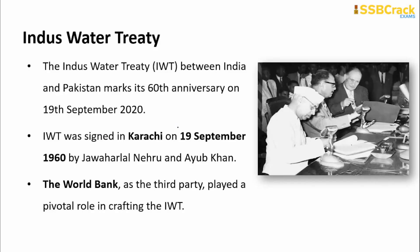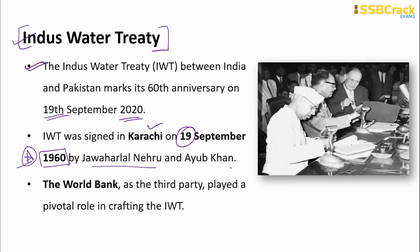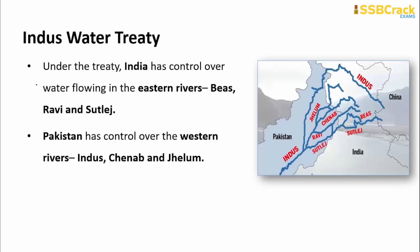The next important update is about the Indus Water Treaty. On 19th September 2020, it was the 60th anniversary of the Indus Water Treaty. The treaty is between India and Pakistan and was signed in Karachi on 19th September 1960. It was signed between Jawaharlal Nehru and Ayub Khan. The World Bank was also a party and played a very important role in crafting the treaty.